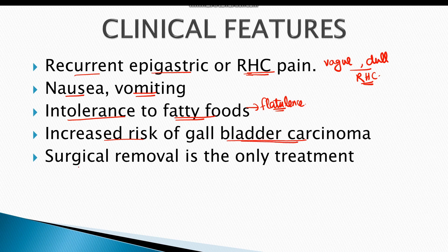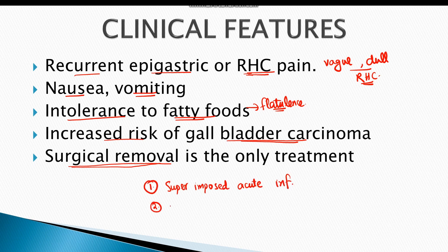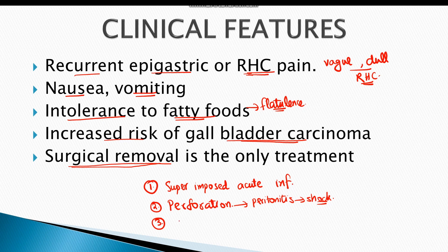The only treatment for chronic cholecystitis is surgical removal, or cholecystectomy. The common complications include superimposed acute infection and gallbladder perforation, which can lead to peritonitis and hemorrhagic shock due to bleeding from the perforated gallbladder. Long-term complications include gallbladder carcinoma and gallstone ileus.